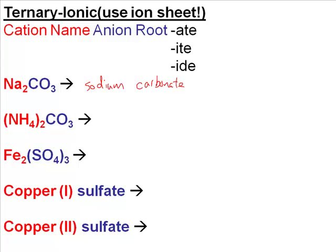The next one is NH4. If you look on the green ion sheet, NH4 is a positive cation. It has a specific name — what is its name? Ammonium. It is the only cation that will have more than one atom in it — the only cation that has more than one element. So this is ammonium, and the CO3 is still carbonate.